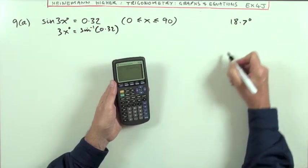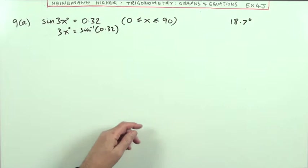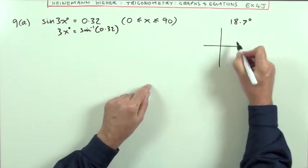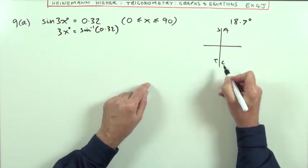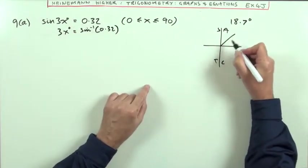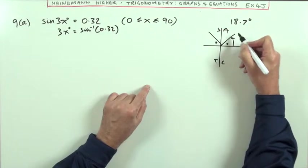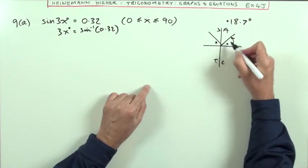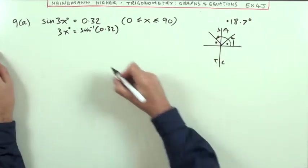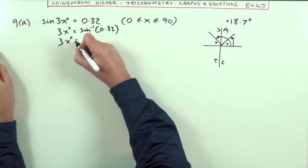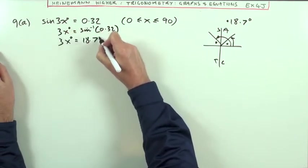Using the CAST diagram where all sine tan cos, sine is positive in the first and second quadrants. So we have 18.7 degrees there, or 18.7 short of 180, giving us 161.3 degrees. The solution would be 18.7 degrees.